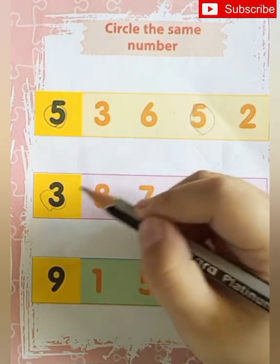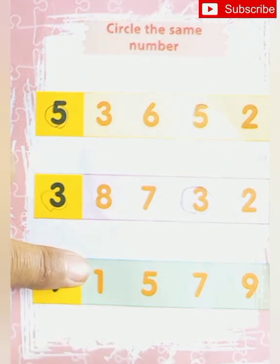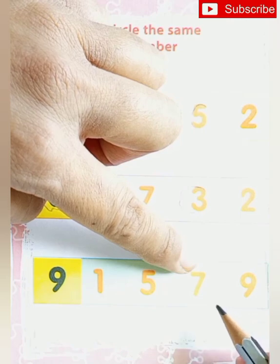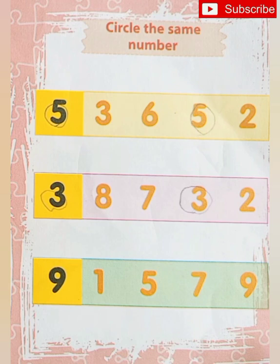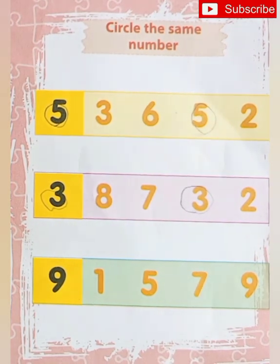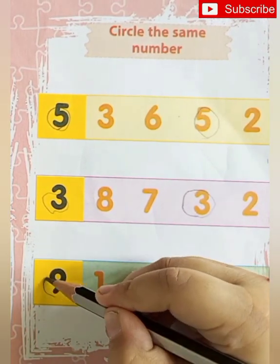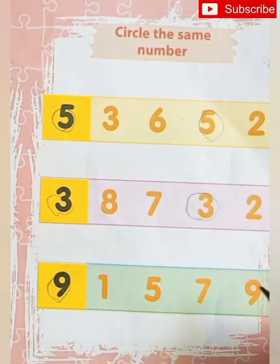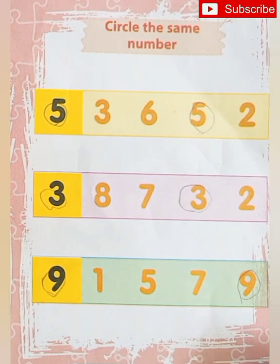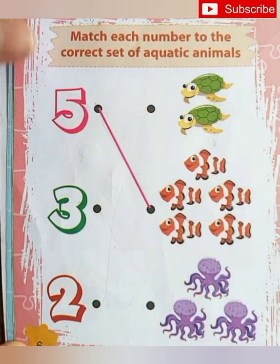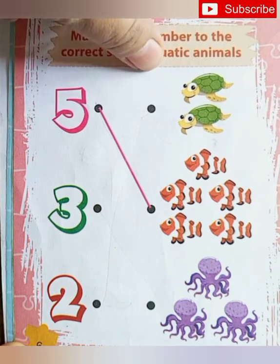This is number 9, this is 1 and 5, this is 7, this is 9. Which number are same? 9. 9 numbers are 2 times, okay? That's why, make a circle. Good.